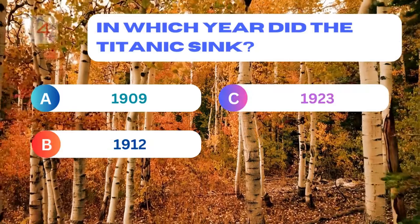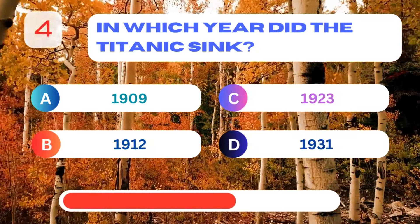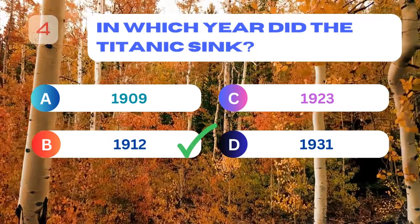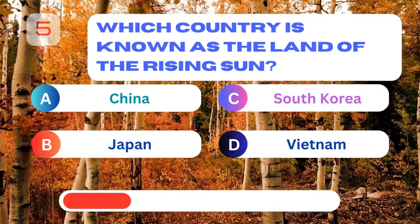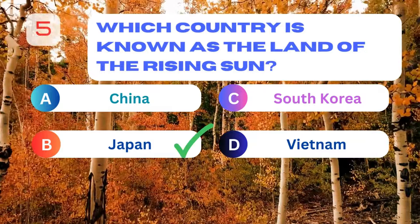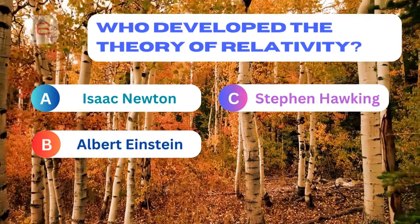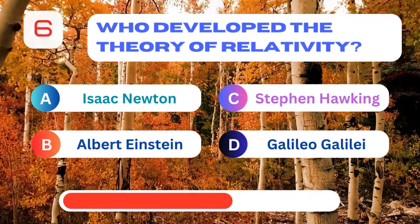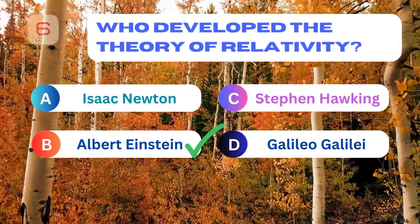In which year did the Titanic sink? 1912. Which country is known as the land of the rising sun? Japan. Who developed the theory of relativity? Albert Einstein.